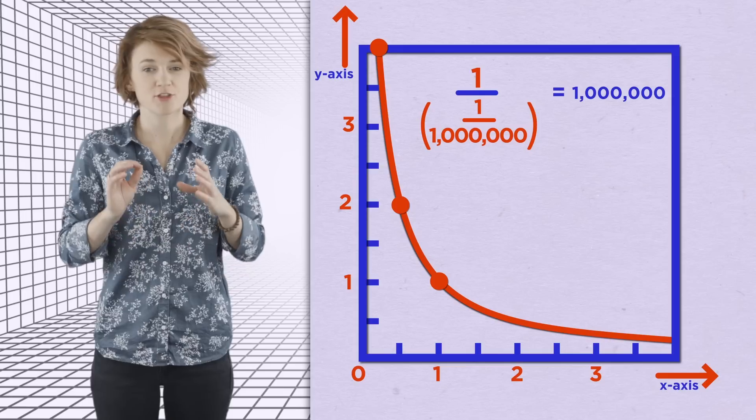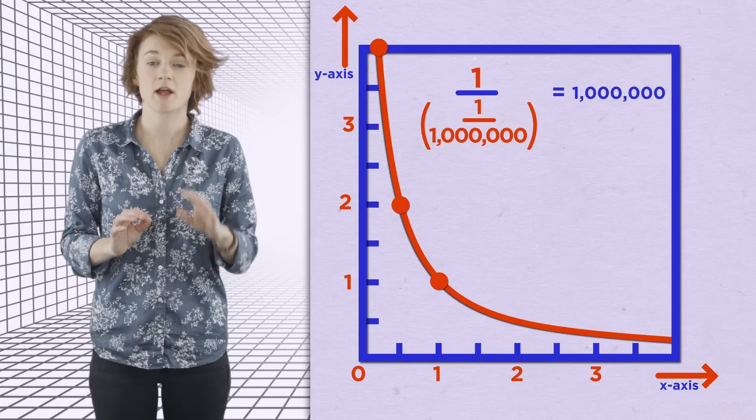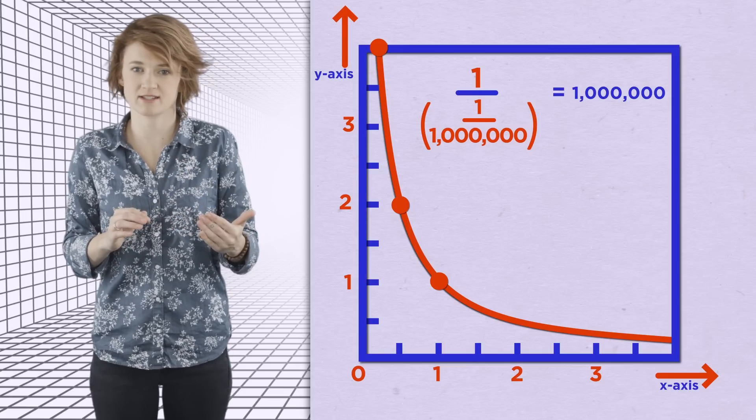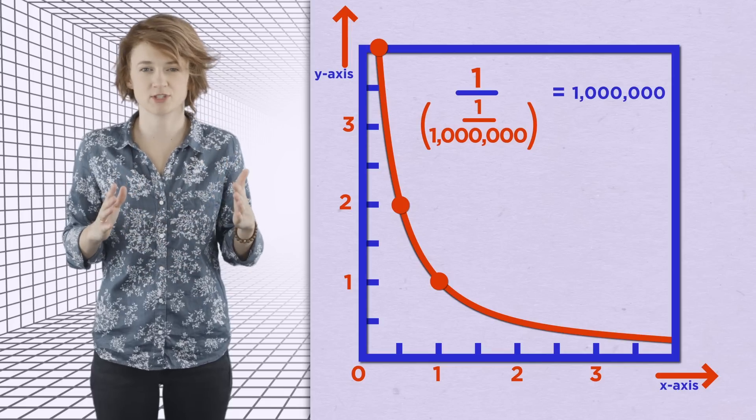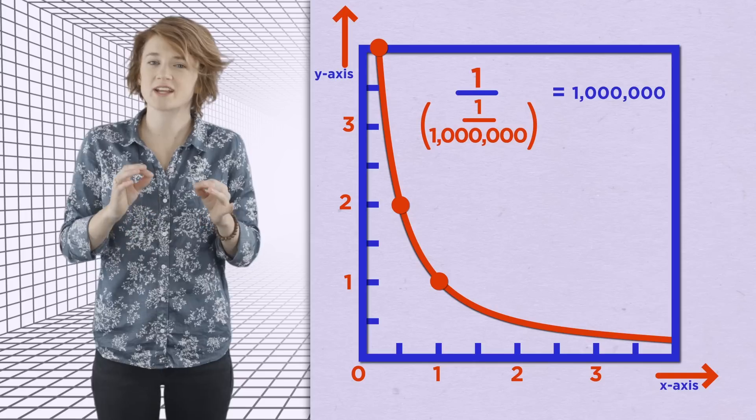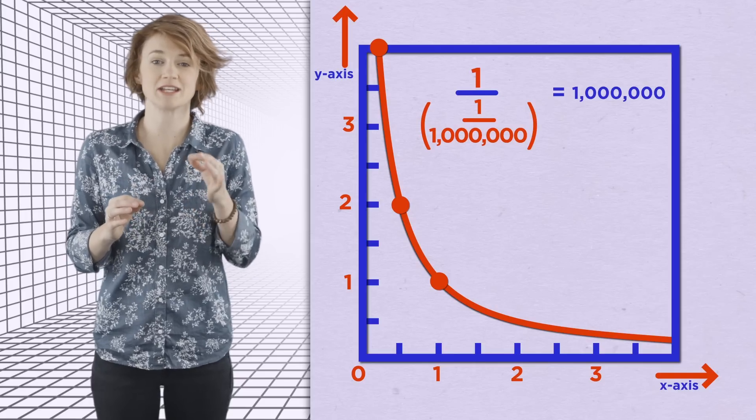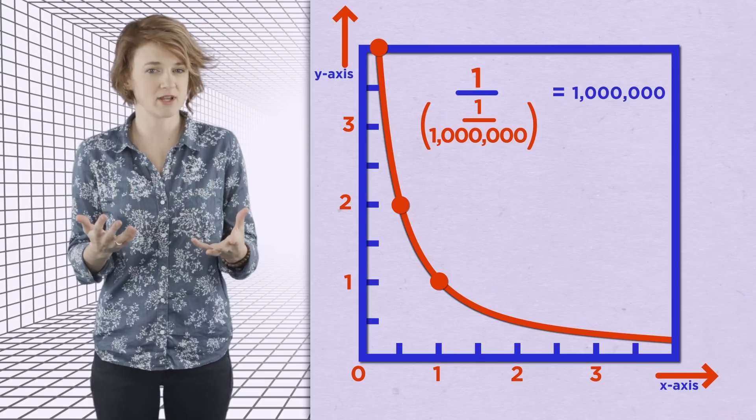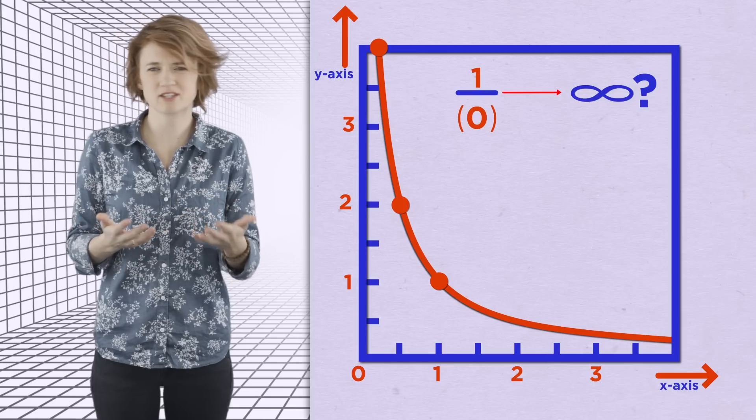See what's happening? The closer x gets to zero, the bigger 1 divided by x gets. There's no limit to its growth. It just keeps getting bigger and bigger and bigger, which is why it's tempting to say the function equals infinity at the point x equals 0, even though that's a bit confusing.